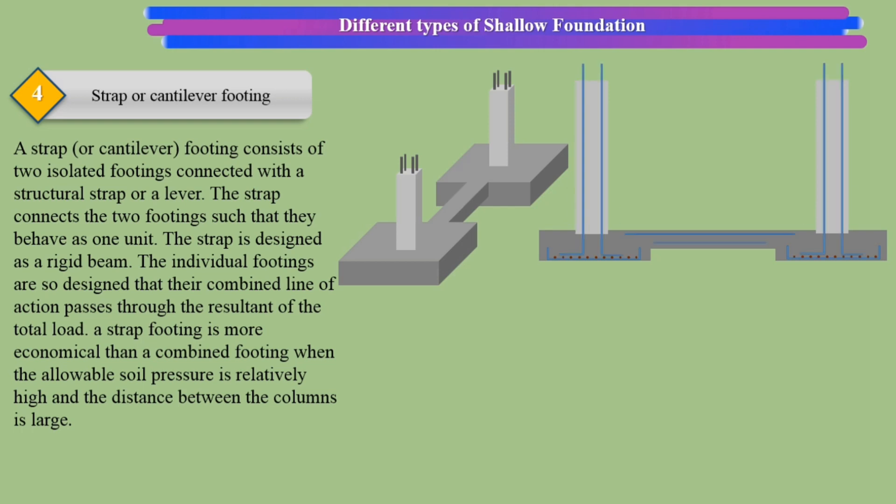The individual footings are so designed that their combined line of action passes through the resultant of the total load. A strap footing is more economical than a combined footing when the allowable soil pressure is relatively high and the distance between the columns is large.